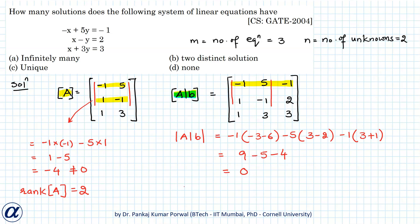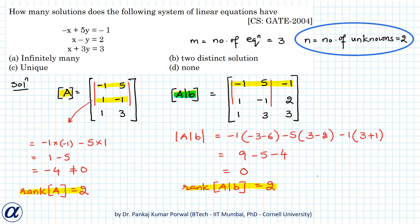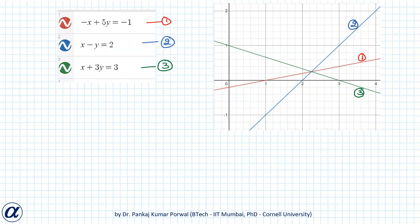Since the determinant is zero, rank of the augmented matrix is less than 3. But since a 2×2 minor is non-zero, the rank of the augmented matrix is also 2. The rank of A equals the rank of the augmented matrix, and both equal n = 2 (the number of unknowns). Therefore, this system of equations has a unique solution — answer C is correct.